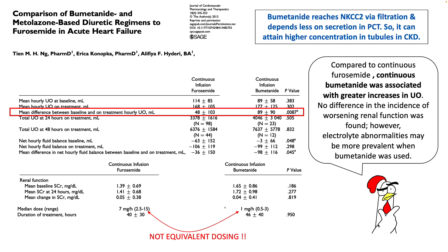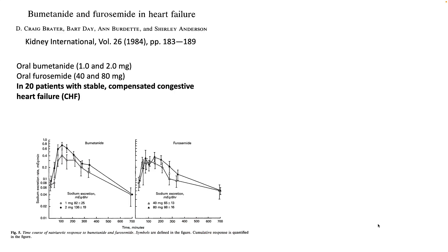Bumetanide does offer an advantage of being filtered apart from its secretion into the PCT, so it can theoretically attain higher concentrations in the tubules in CKD. But you have to be very careful when you read the abstract of the literature. For example, in this study which compared continuous infusion of furosemide and bumetanide, the amount of urine production was certainly much better in the bumetanide group, however if you look closely the dosing were not equivalent.